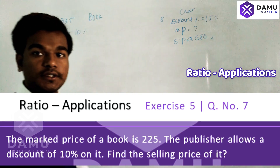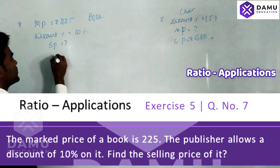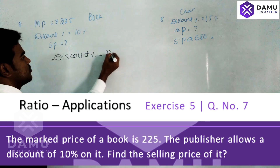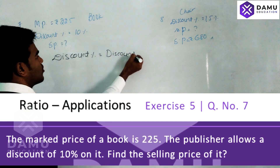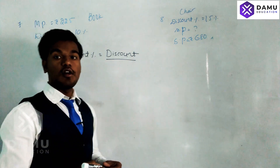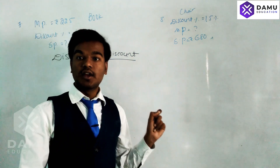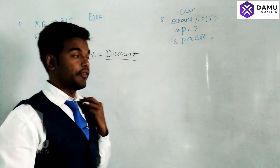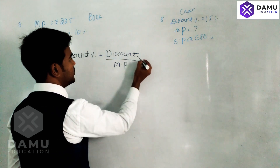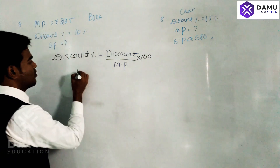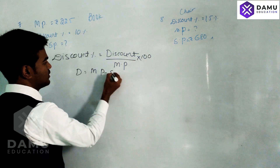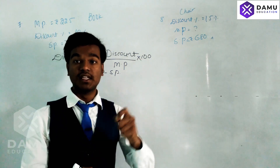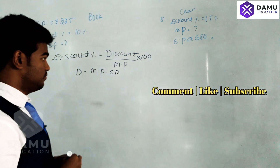We should know the discount percentage formula. Discount percentage equals discount divided by market price, multiplied by 100. Note that for profit or loss, the denominator is cost price, but for discount, the denominator is always market price. Discount equals market price minus selling price, because after giving a discount, the market price becomes the selling price — it decreases.